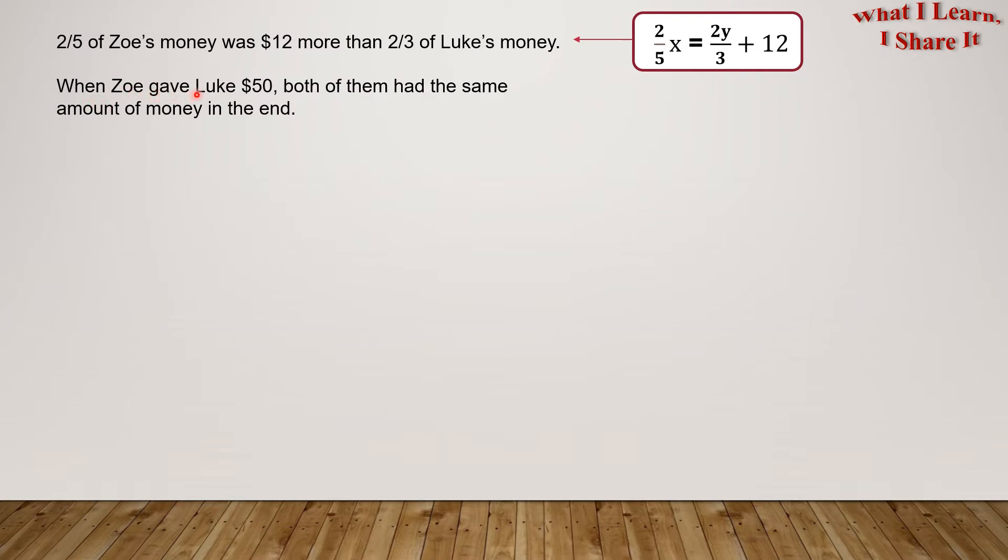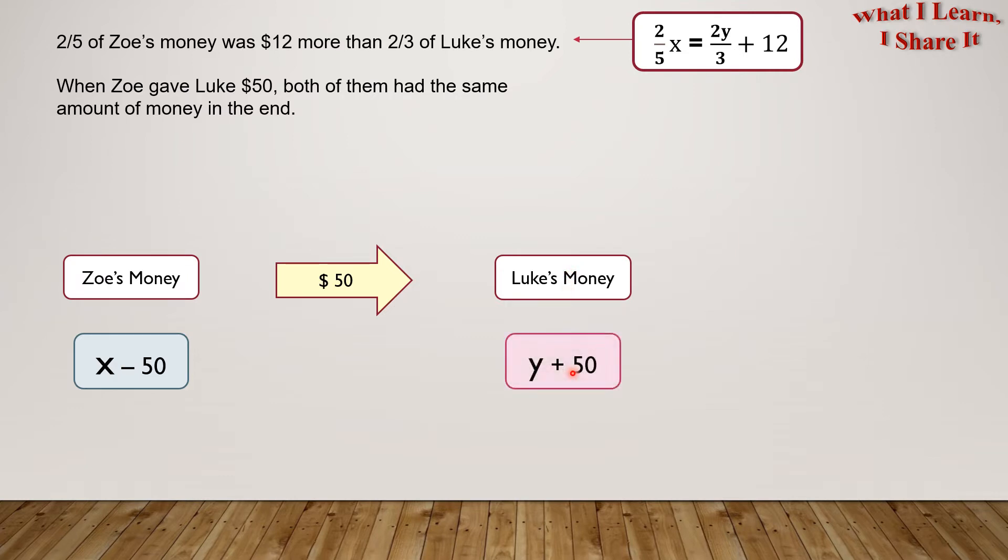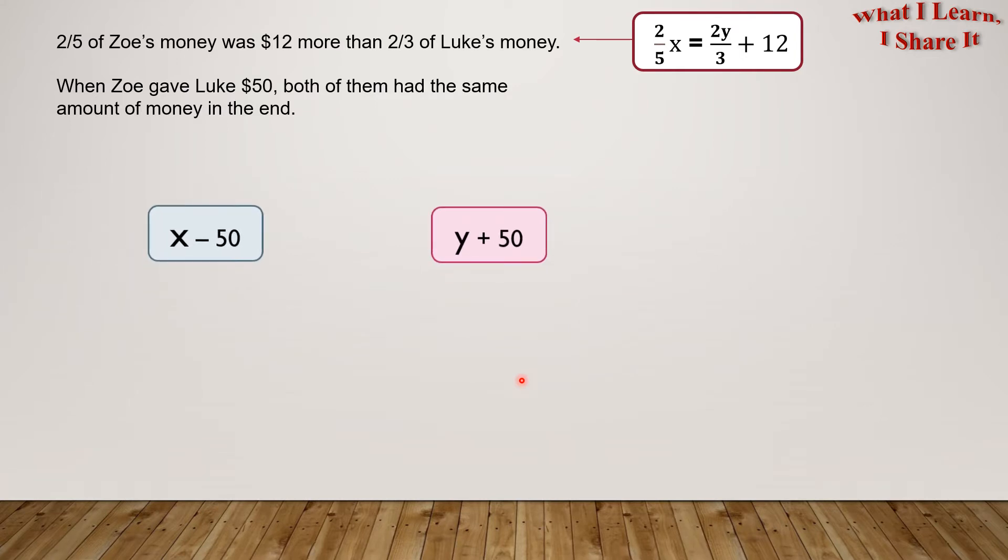When Zoe gave Luke $50, both of them had the same amount of money in the end. Now, we have a new situation. Zoe gives Luke $50. What this means is Zoe's money, which was represented by X, gets reduced by 50. And Luke's money, which was represented by Y, gets increased by 50. But after this transfer, both of them had the same amount of money, which means X minus 50 and Y plus 50 are equal. Let's remember this as a conclusion of the second statement.